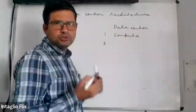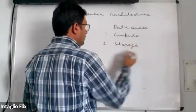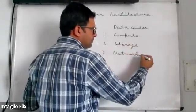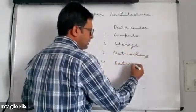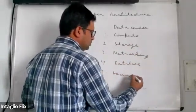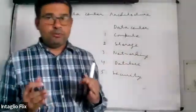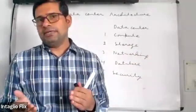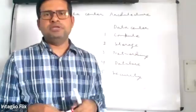The second component is storage, third is networking, fourth is database, and fifth is security. These are the five basic components of a data center, and no data center can work without all five of them.